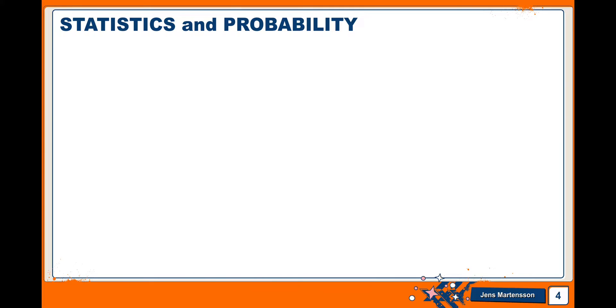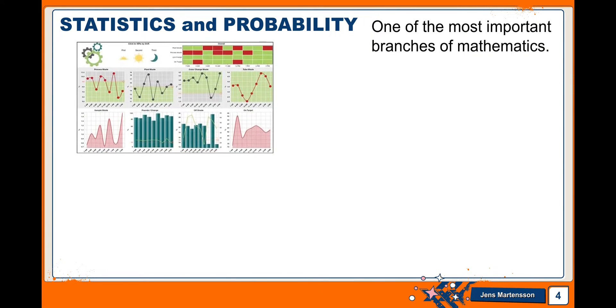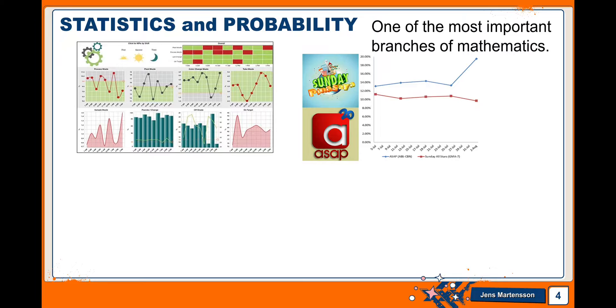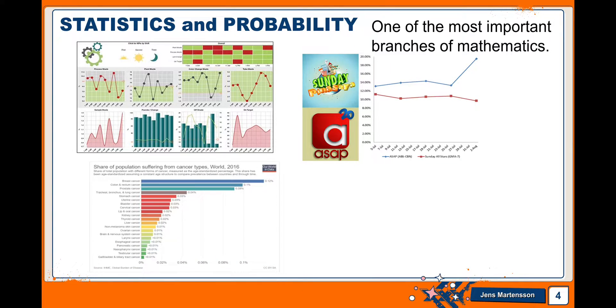Statistics and probability is one of the most important branches of mathematics that is often taken for granted by everyone. Statistics plays a very important role in our lives. Without statistics, companies could not effectively assess the performance of their manufacturing plants, TV channels would have no way of knowing which TV shows people prefer to watch, we could not be aware of the death rate caused by cancer or COVID-19 and many more.